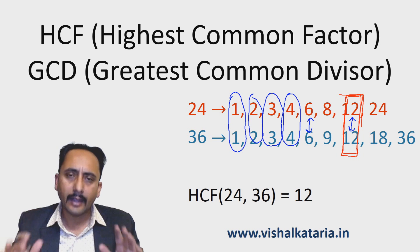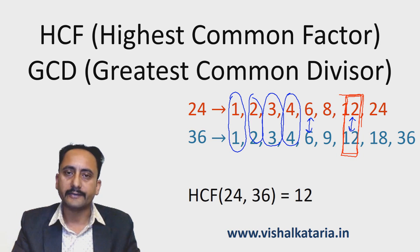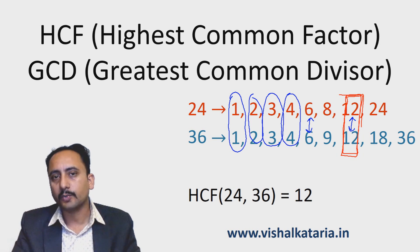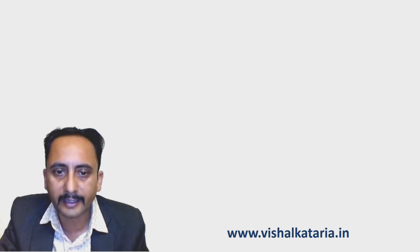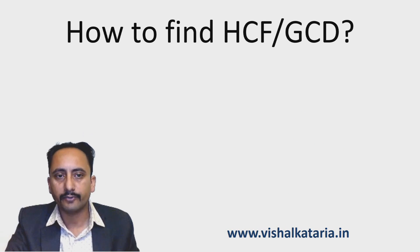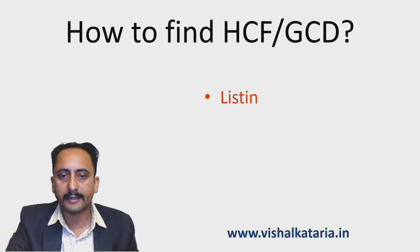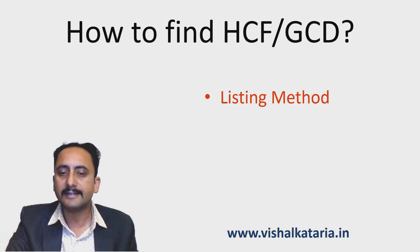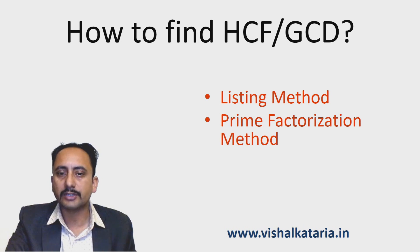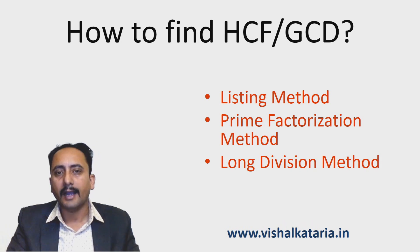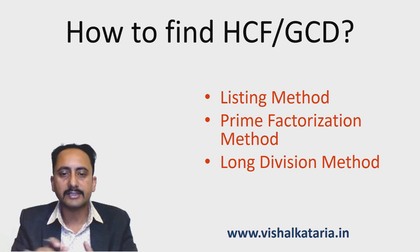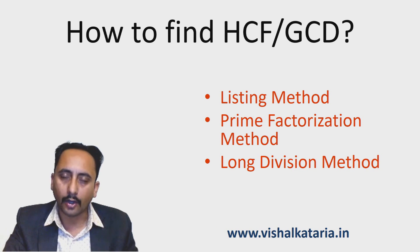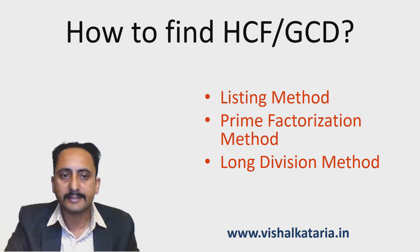This method of finding HCF is known as the listing method. It is very convenient for small numbers, but when the numbers are large it is not very convenient. Now let me explain the three methods to find HCF: the first is the listing method, which I've just explained; the second is the prime factorization method; and the third is the long division method. I'll now discuss the prime factorization method.